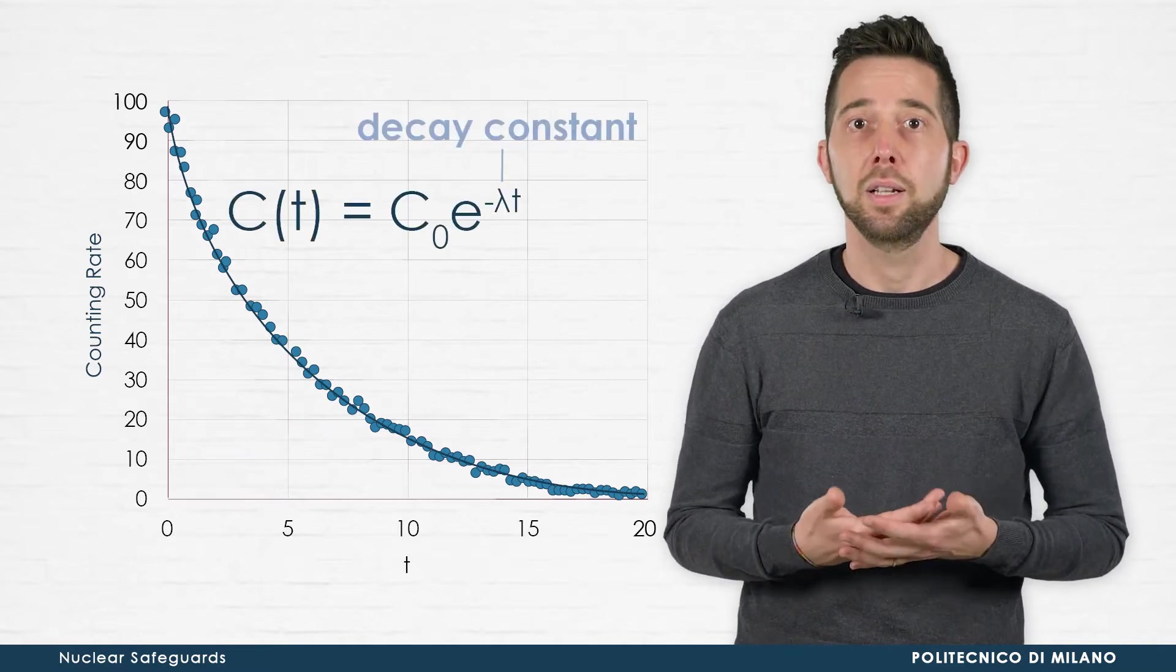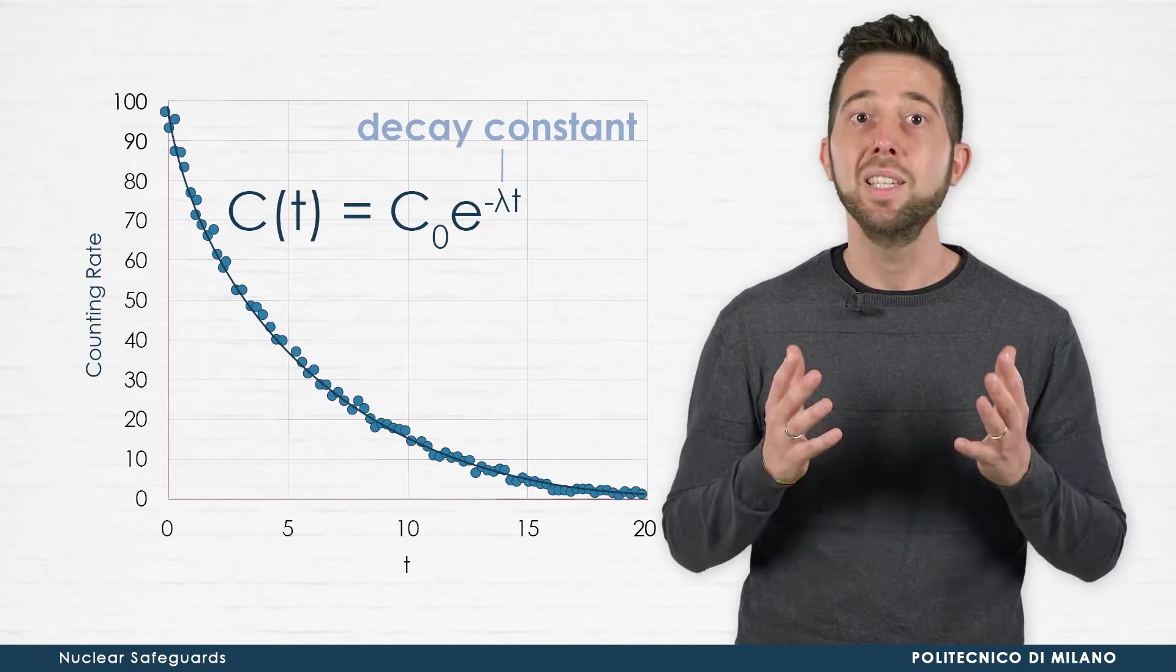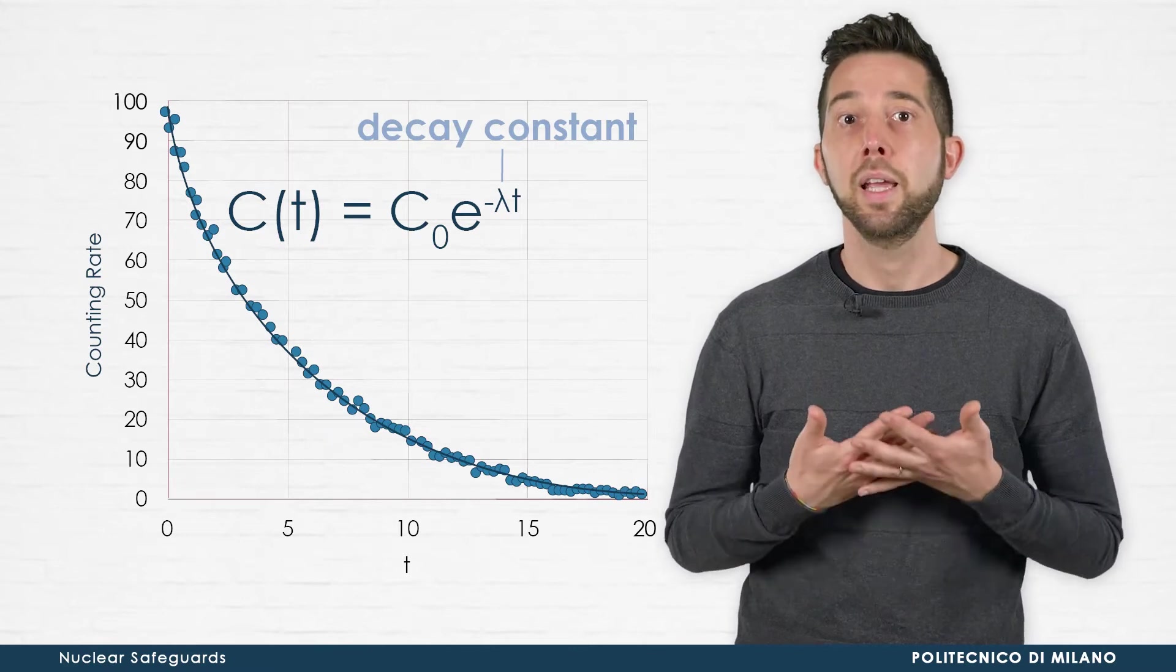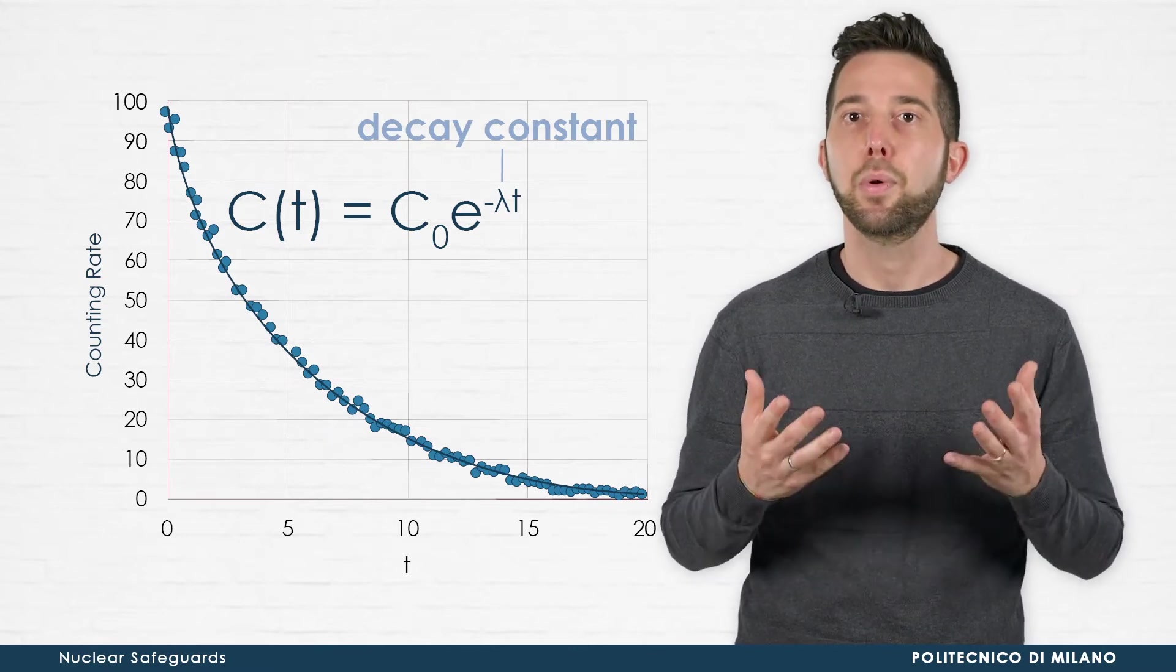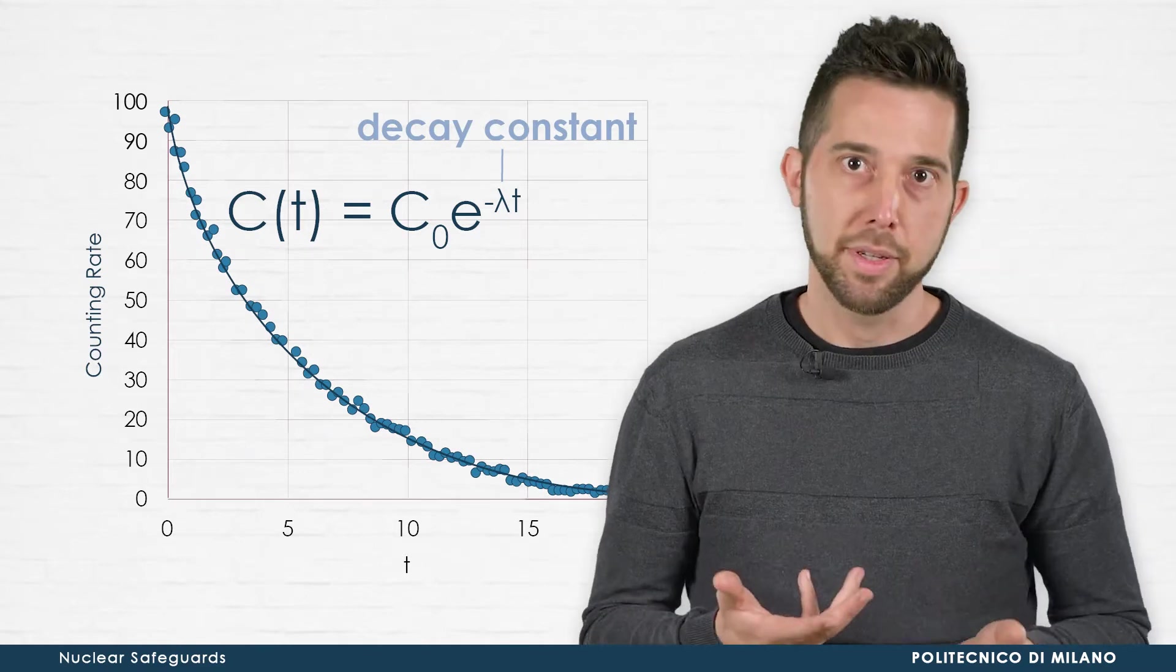the experimental evidence shows a global time evolution correctly modeled by an exponential decay law, with a constant exponent, lambda, that takes the name of decay constant. As a result,